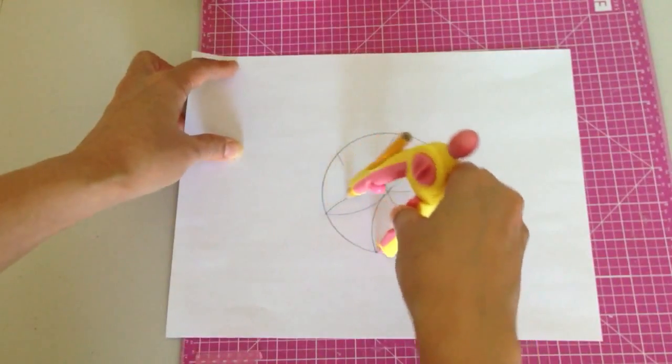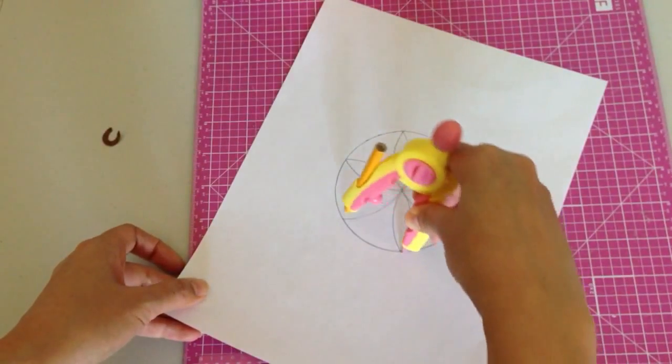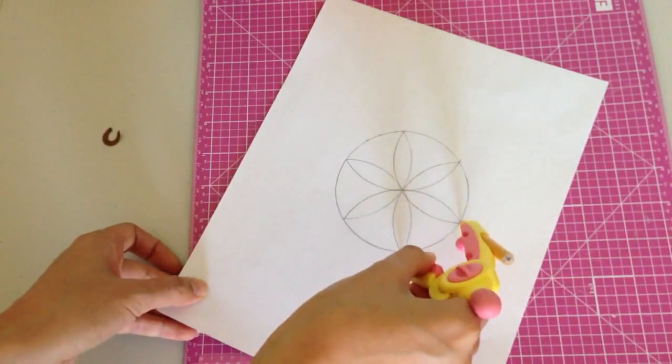And then you're going to go to the next one. So you're just going to end when it intersects again. And there you go.